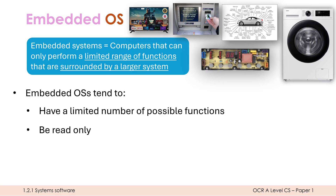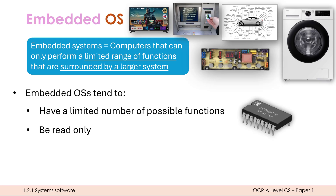Embedded OSs also tend to be read-only, meaning the user isn't able to interact with them and save anything. That's often because the hardware uses a lot more ROM than a normal computer. In many embedded systems, the OS may be held in ROM as opposed to secondary storage. The reason for this is that it's cheaper to just have ROM — if you don't need to save anything, you don't need secondary storage.